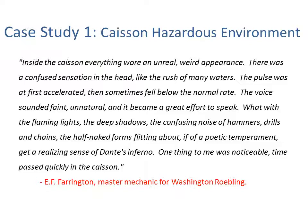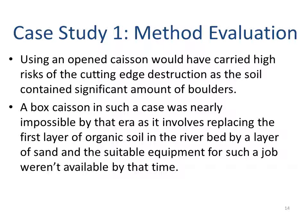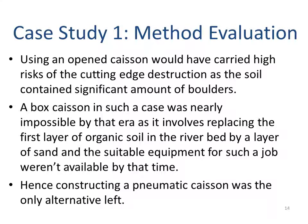Caisson disease is significantly serious when reaching depths greater than 35 meters. However, examining whether another method was available: using an open caisson would have carried high risks of cutting edge destruction as the soil contained significant boulders. The box caisson was nearly impossible at that era because it required replacing the first layer of organic riverbed soil with sand, and suitable equipment was not available at the time. Therefore, the pneumatic caisson was the only viable option.